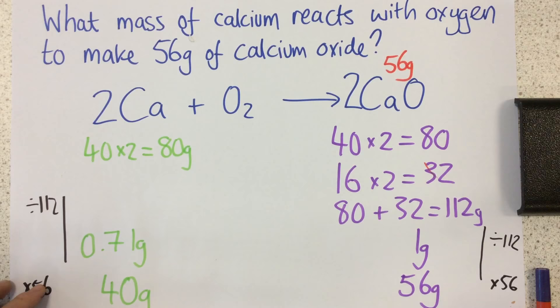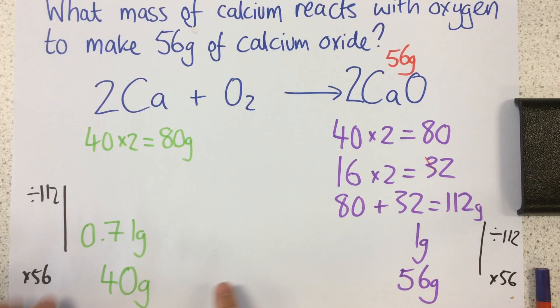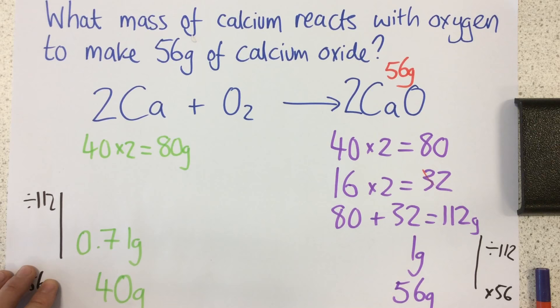So we can see I need 40 grams of calcium to make 56 grams of calcium oxide. So that's how we do these.